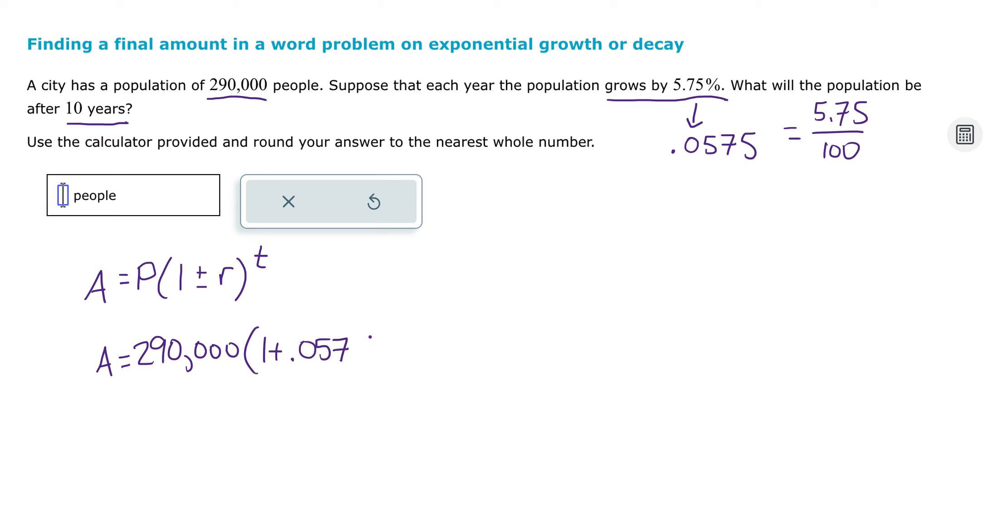And then T is going to be my time in years in this case, so that's 10 years. So plug this into your calculator, just type it in. And when I do that, I get this number.